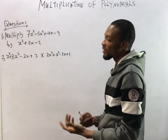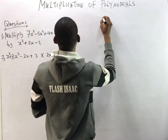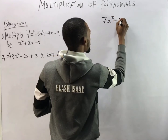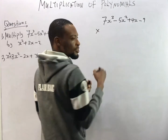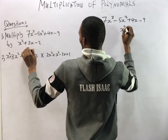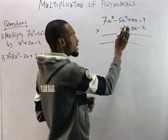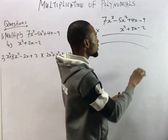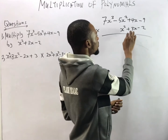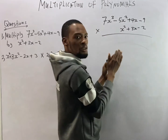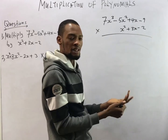Question 1: multiply this by this. Question 2: multiply this by this. To solve Question 1, we bring out the expressions: 7s³ minus 5s² plus 4s minus 9, times s² plus 3s minus 2. This is degree 3 and this is degree 2. To multiply polynomials, we take each value from the second expression and multiply it by the first expression, then add all the results at the end.